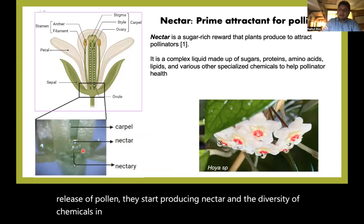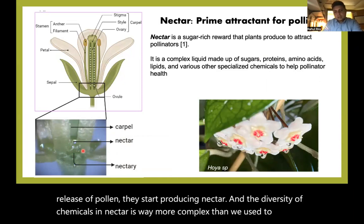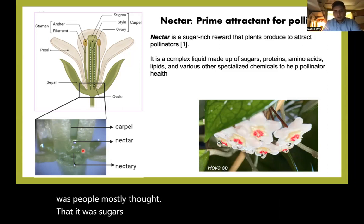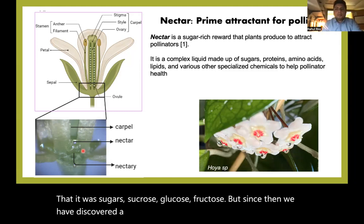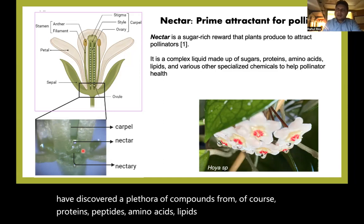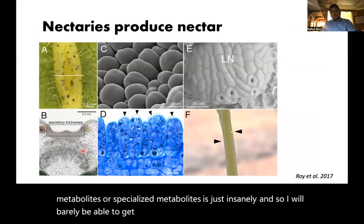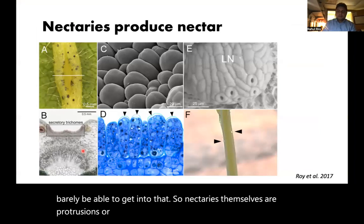The diversity of chemicals in nectar is way more complex than we used to think. People mostly thought it was sugars — sucrose, glucose, fructose — but since then we have discovered a plethora of compounds including proteins, peptides, amino acids, lipids, and the gamut of secondary or specialized metabolites. Nectaries themselves are protrusions or specialized tissue structures that can have a lot of variety.